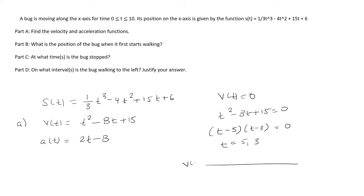So what this means is at time 3 and 5, the velocity is 0. So we want to have the bounds from 0 to 10 because that's what t is from.